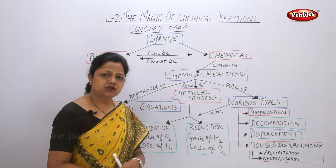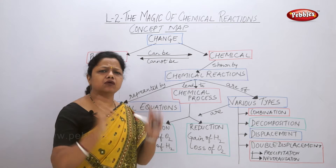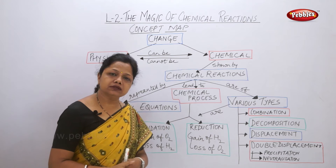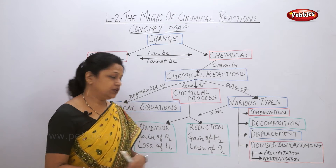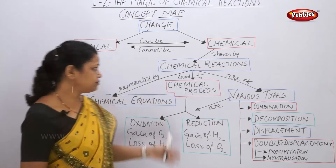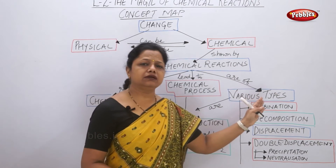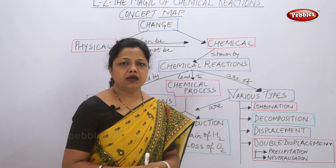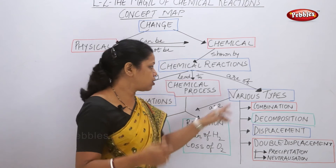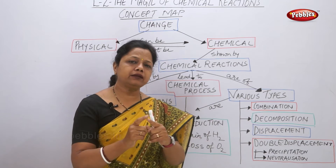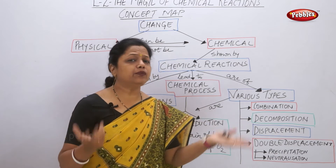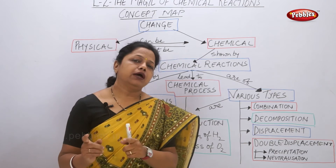We are seeing so many changes around us, and we have to identify which chemical processes are happening — it can be either oxidation or reduction. Chemical reactions are also of various types. The first is the combination reaction, where two things combine to form one product. Two reactants give one product — that is called a combination reaction.